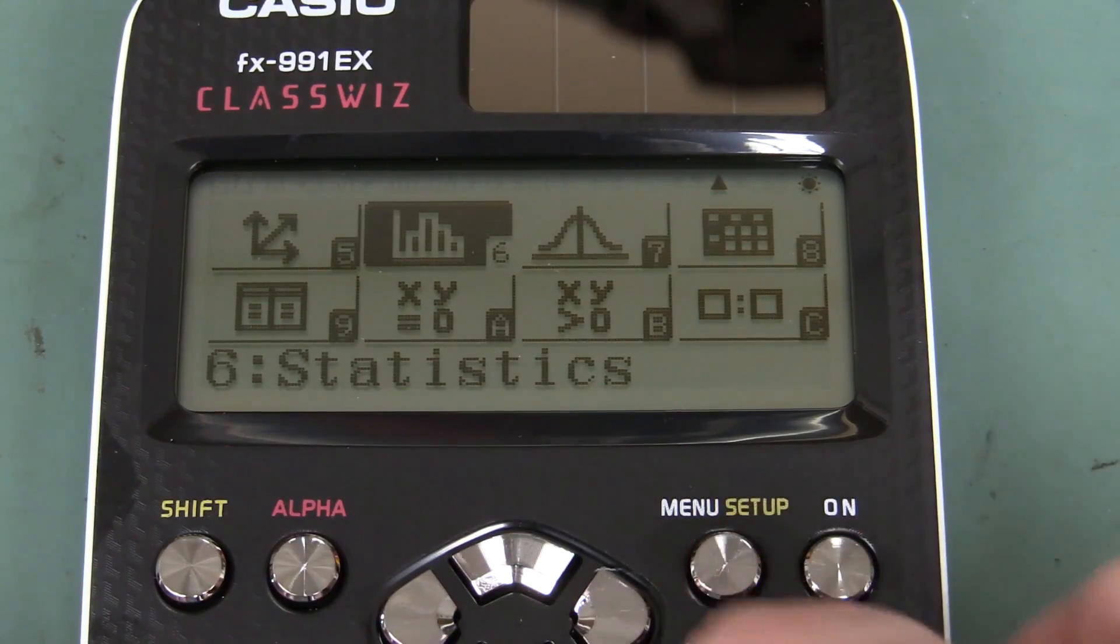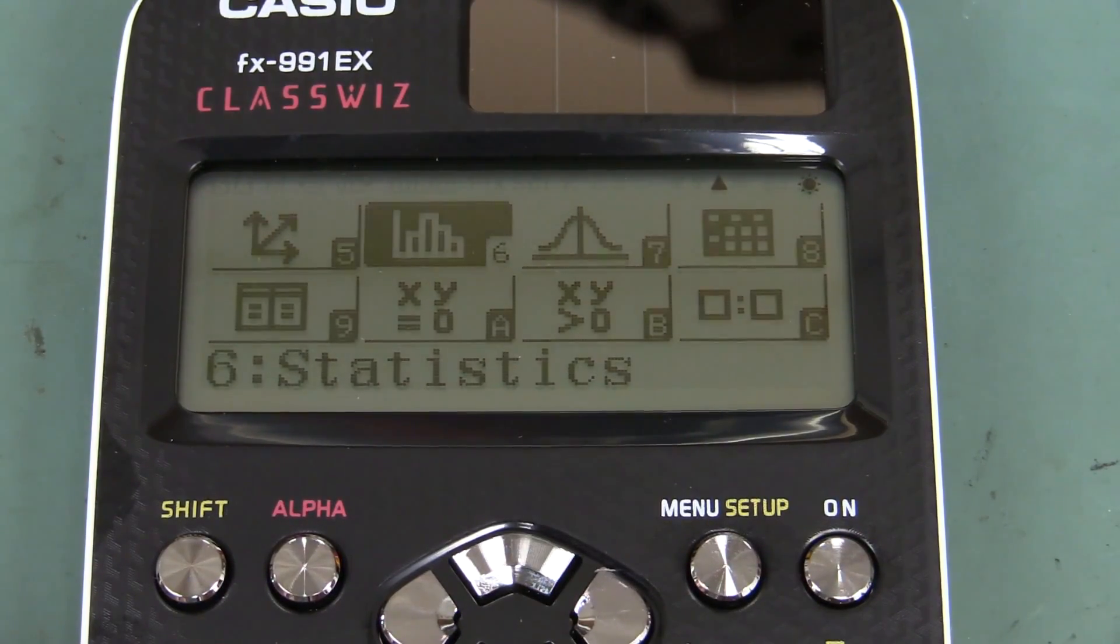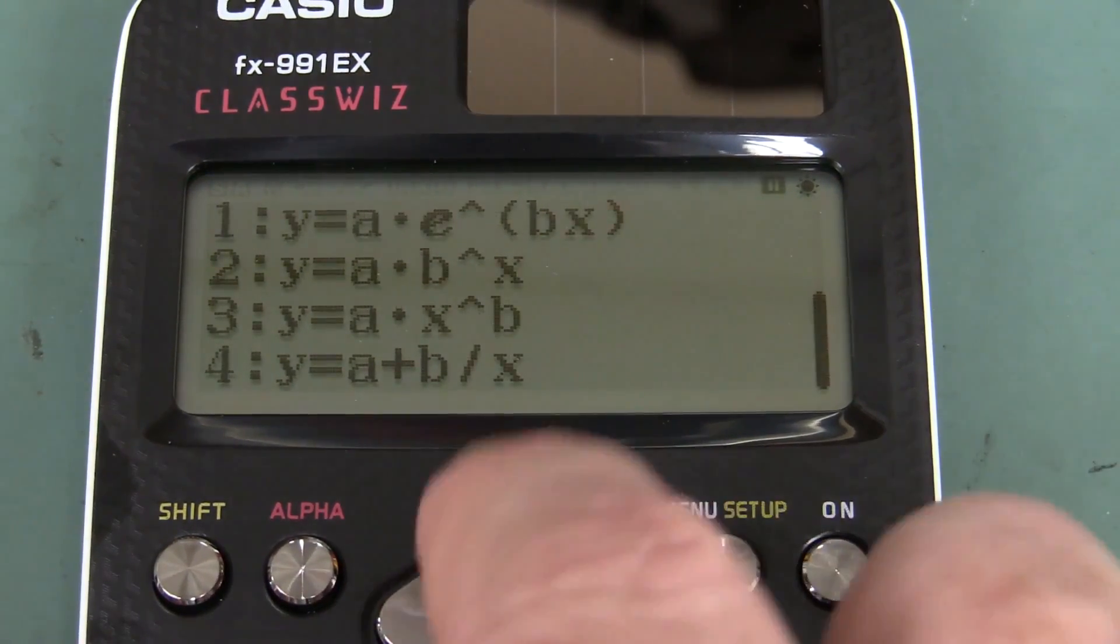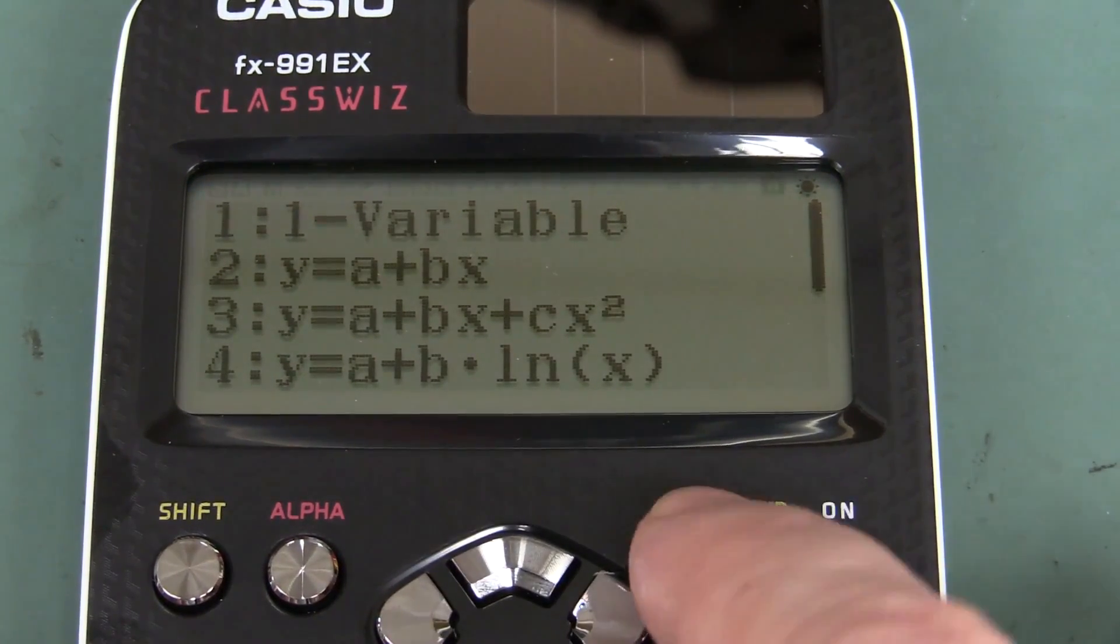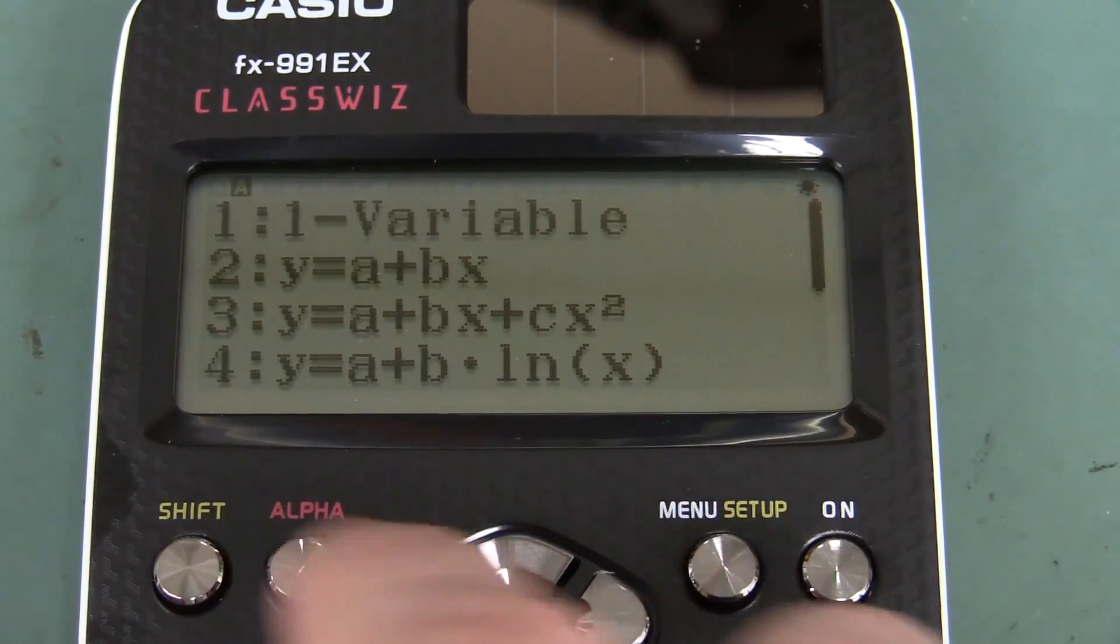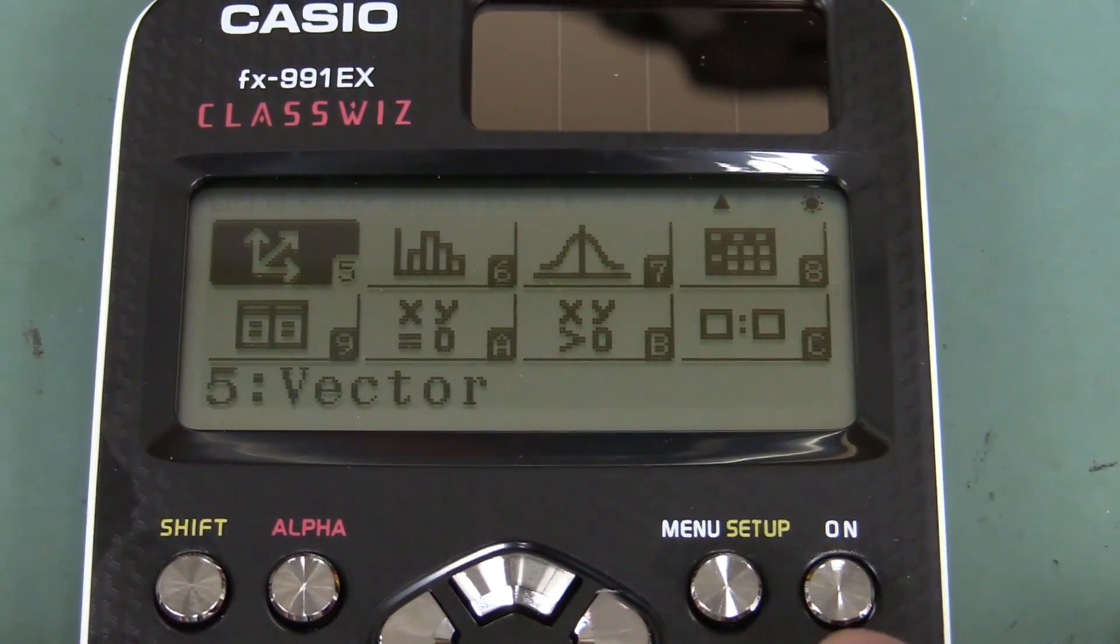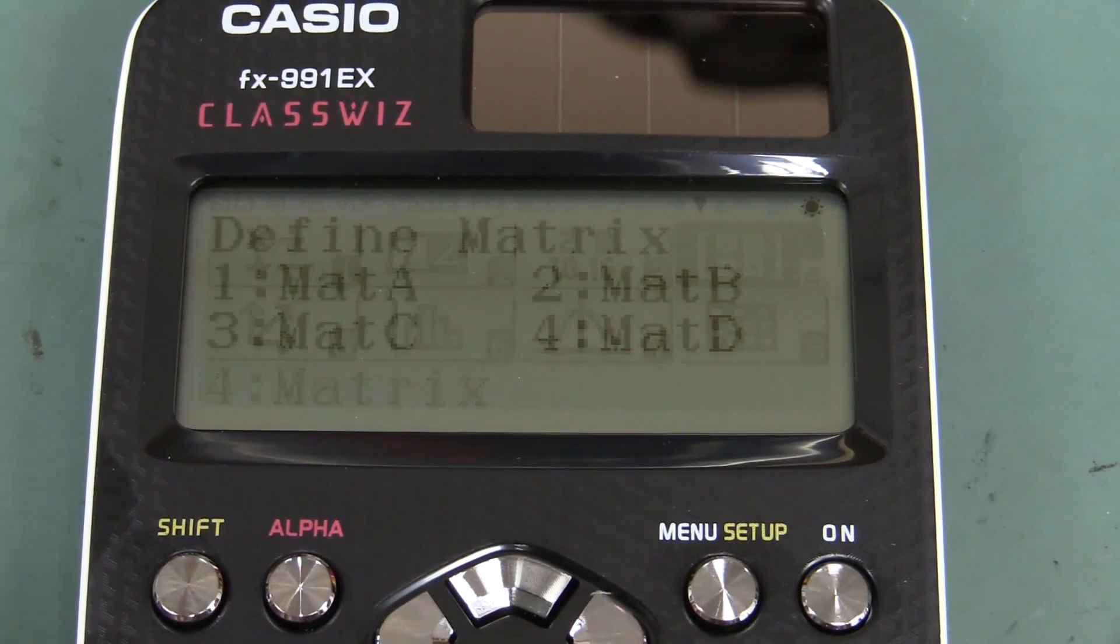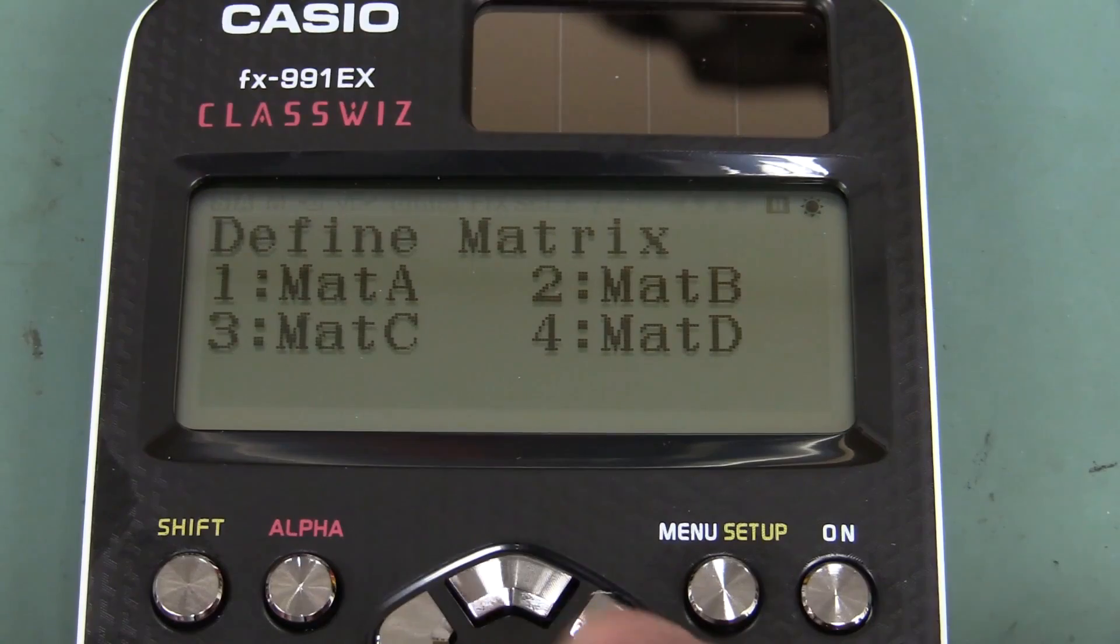And we can do statistics, there's all sorts of stats stuff as well. Look at that. Really annoying that there doesn't seem to be a back button there, and if you hit the menu button, it doesn't really do it. We've got vector calculations as well, that sounds pretty groovy. Good old matrices, everyone loves matrices, come on, you know you do.